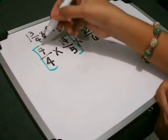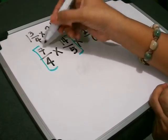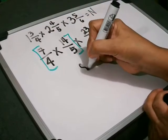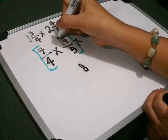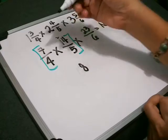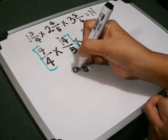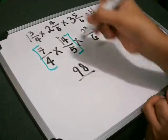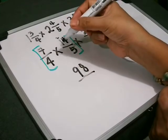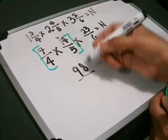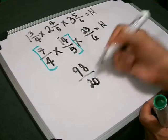7 times 14. 7 times 4 equals 28, carry 2. 7 times 1 equals 7, plus 2 equals 9. And then multiply the denominator, the 2 denominators. 4 times 5 equals 20. There you have it.